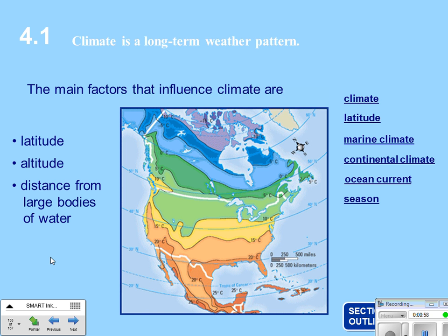Distance from large bodies of water is another factor. The closer you are to water, our temperatures stay a lot warmer in the winter and cooler in the summer because we're closer to the ocean. The oceans are the greatest storehouse of heat, so they hold the temperature a lot longer — the closer you are to water, the harder it is to change the temperature.